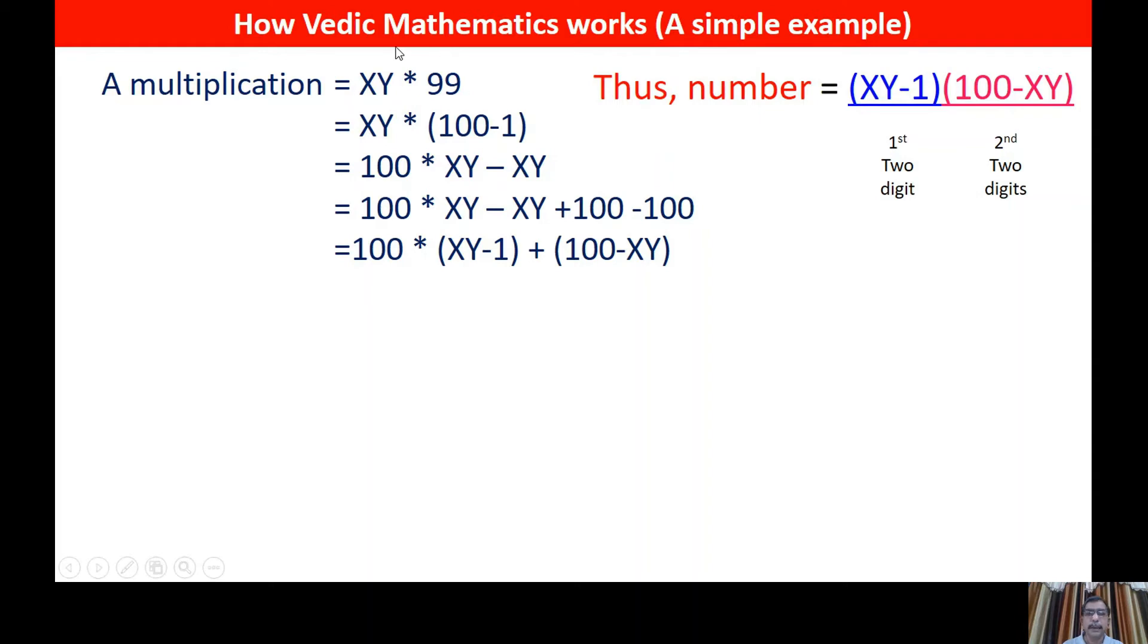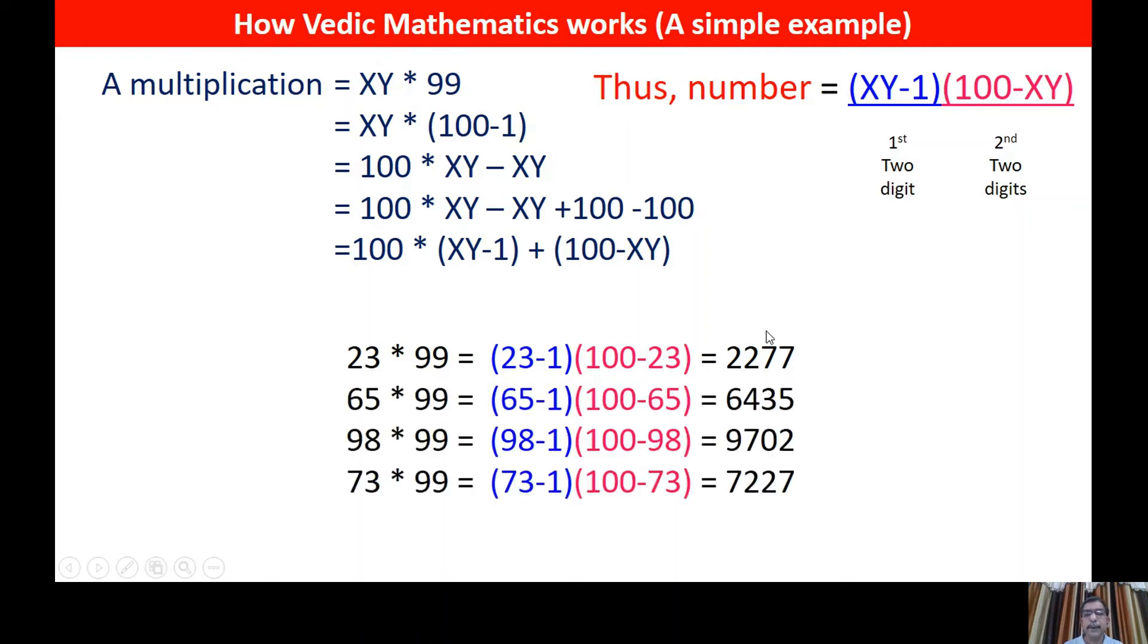So if you look at the examples, here again this complicated multiplication has now been transformed to such kind of subtraction. So what is happening? 23 into 99, you don't require to multiply this, but what you require is reduce minus 1 from the XY and put it here. 23 minus 1 becomes 22, and 100 minus 23 equals 77. So this is the multiplication value. Similarly, if you keep on doing it, so what happens? Any number you can choose and do the same thing and you are going to get the answer.